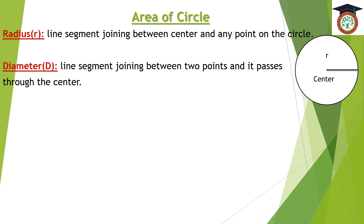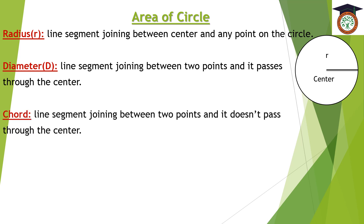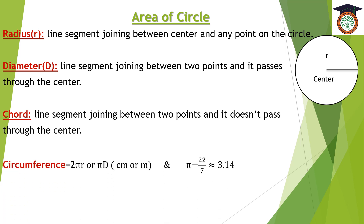The second one is the diameter. It is a line segment joining between two points and it passes through the center of the circle. The third one is the chord. The chord is a line segment joining between two points and it does not pass through the center.